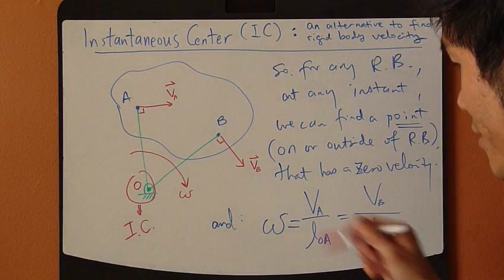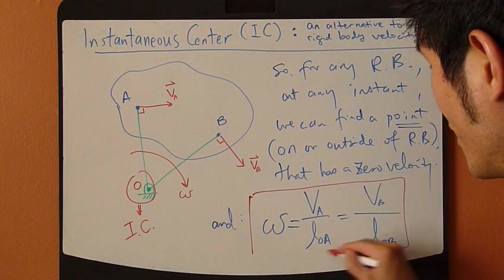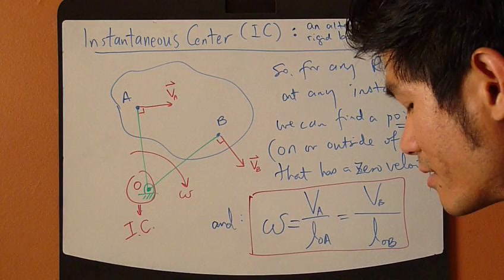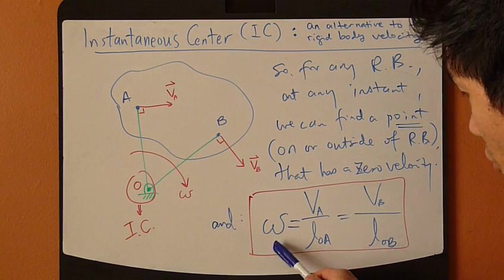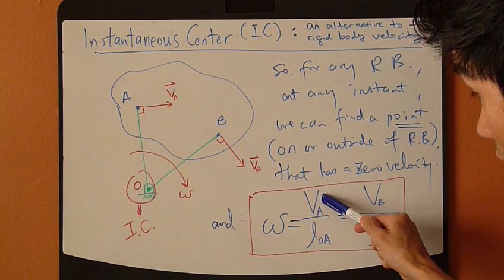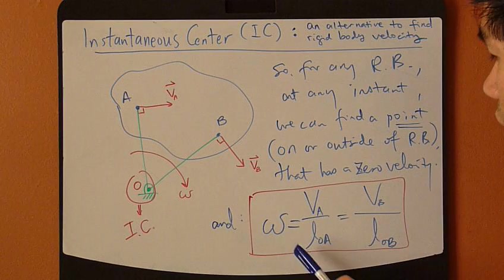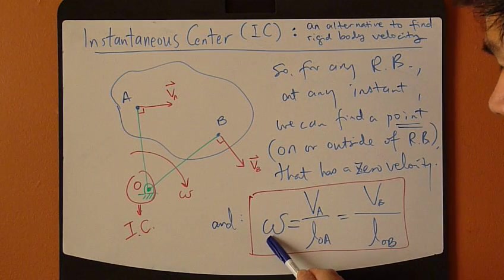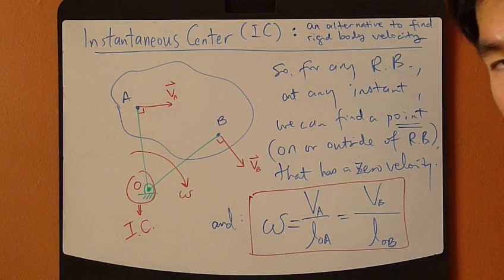So this equation is the essence of instantaneous center method. This will allow you to find velocity of A and B and maybe omega, knowing one of them.